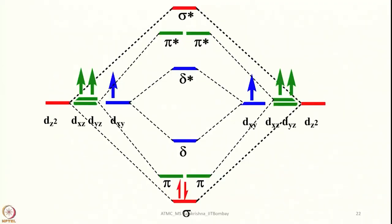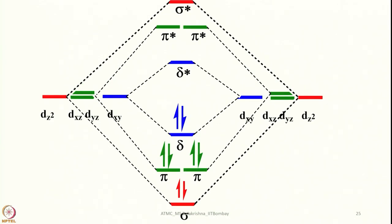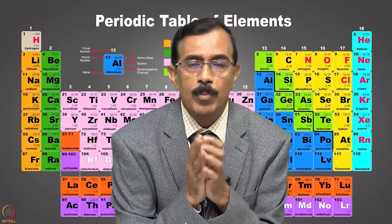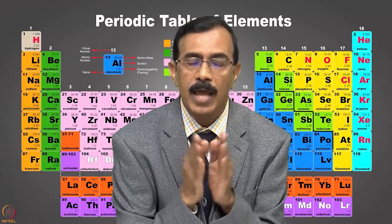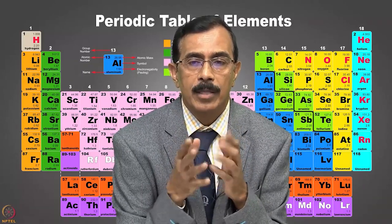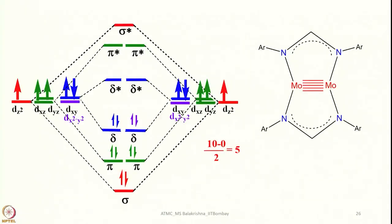Quintuple bonding requires one more orbital — Dx²-y² — which is possible only when the metal has not used Dx²-y² for metal-ligand bonding. This requires lower coordination numbers. In such a case, if SP orbitals are used for ligand bonding, all five d orbitals are available and the metal has 5 d electrons. Since Dxy and Dx²-y² are degenerate at 45°, and Dxz and Dyz are degenerate, we have 10 electrons total giving a bond order of 5. This very nicely explains quintuple bonding using MO diagrams. Go through the examples given; if you have problems, write to me.